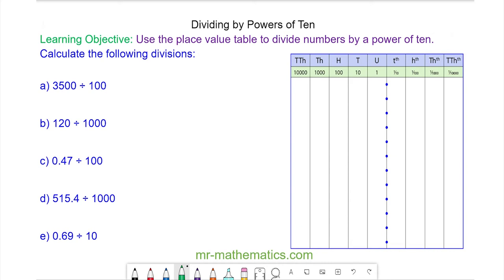Hello and welcome to our lesson on dividing by powers of 10 using a place value table. So we'll begin with question A. We have 3,500 divided by 100.